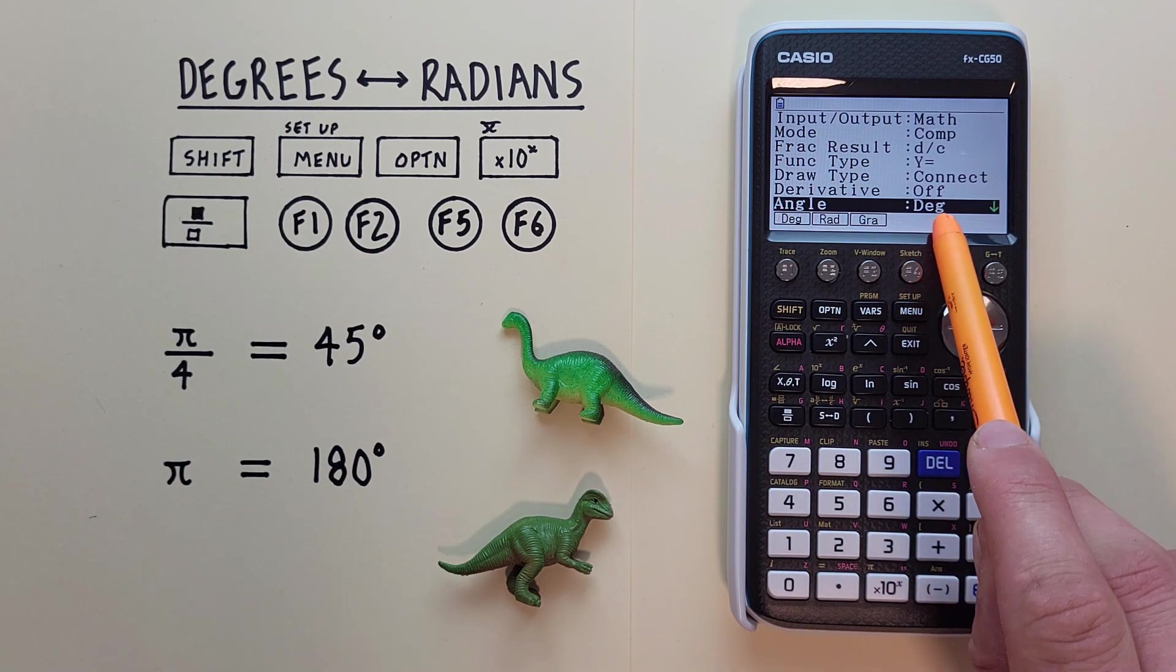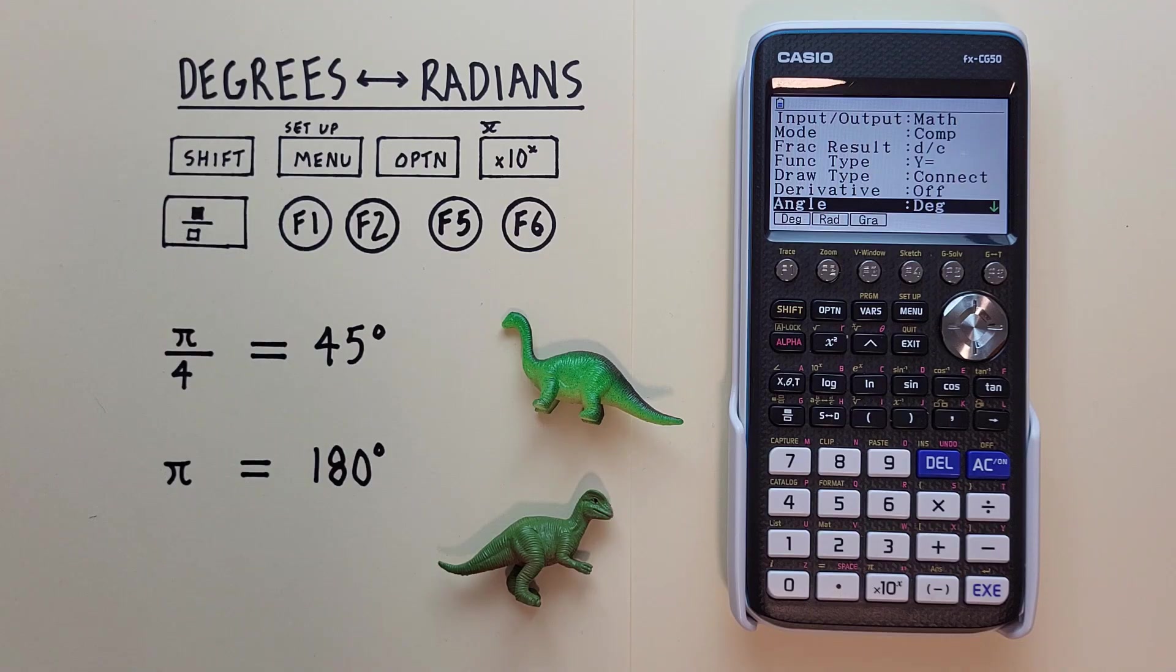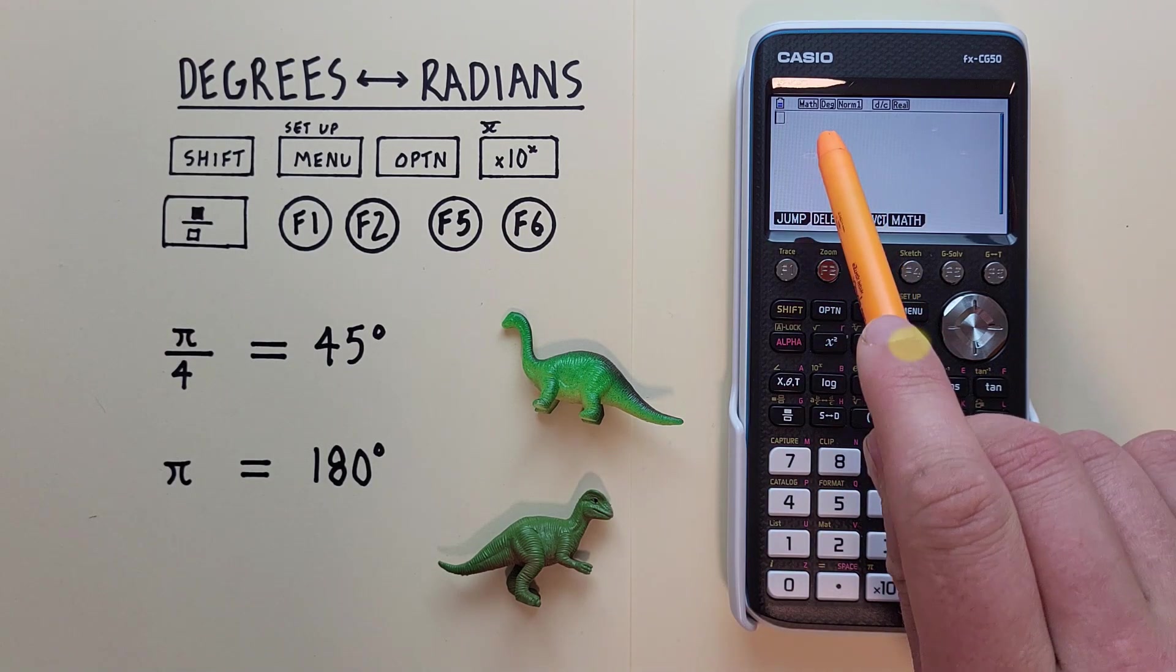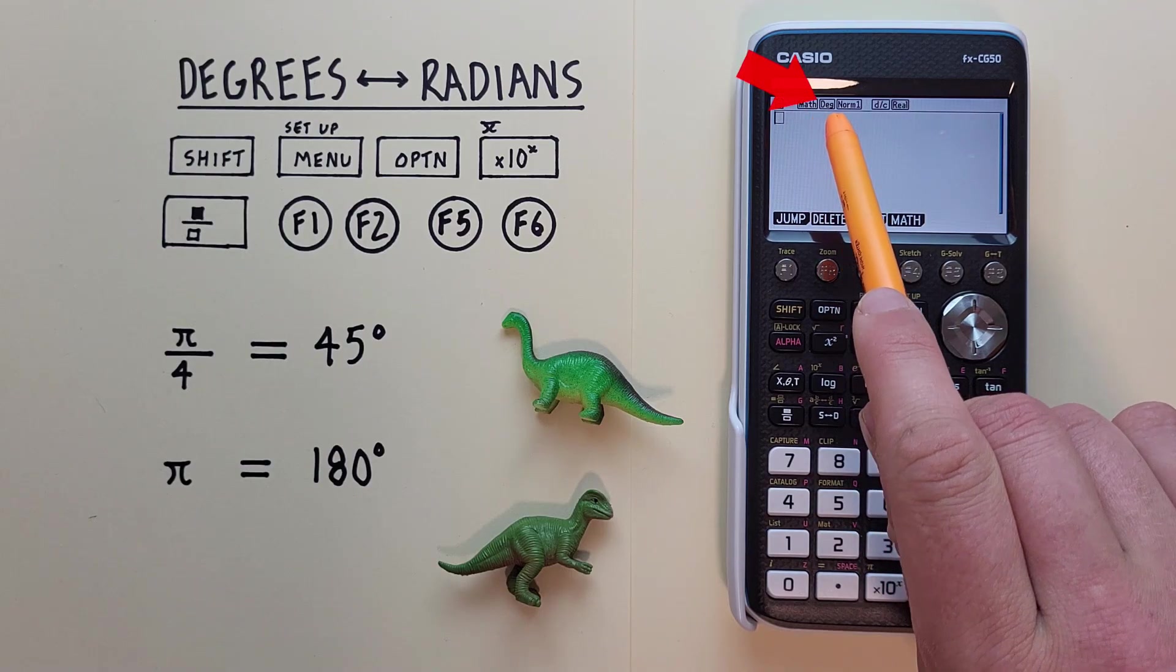We see now it says DEG, so our calculator is set to degrees mode. And then we can exit here. And we see at the top of our screen DEG for degrees.